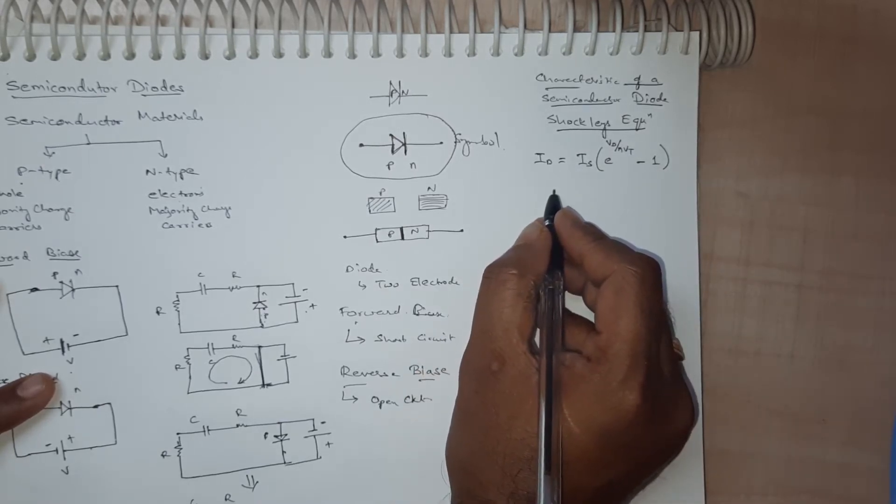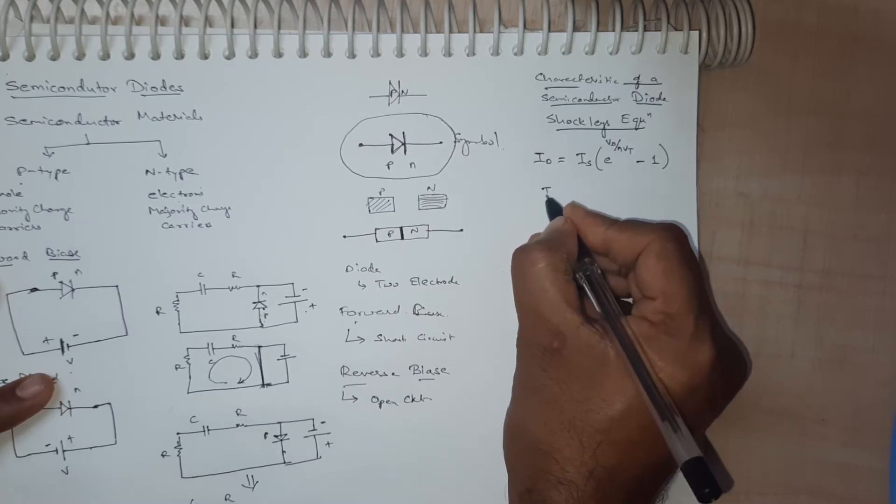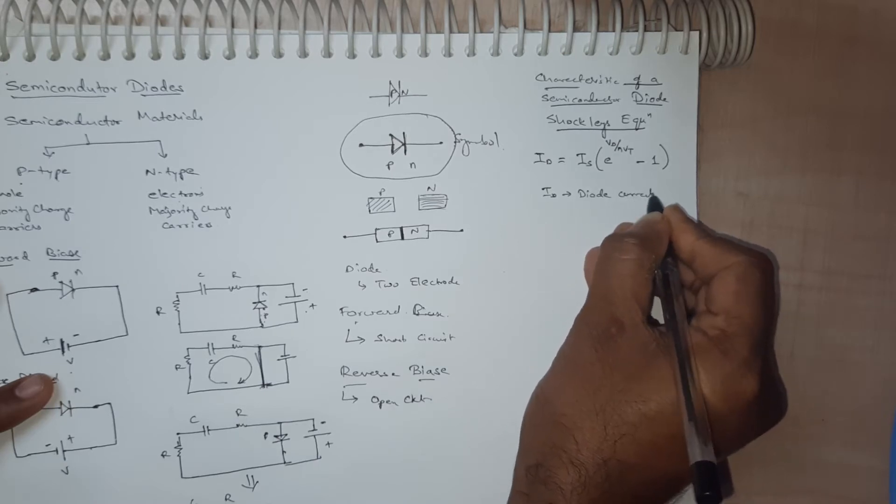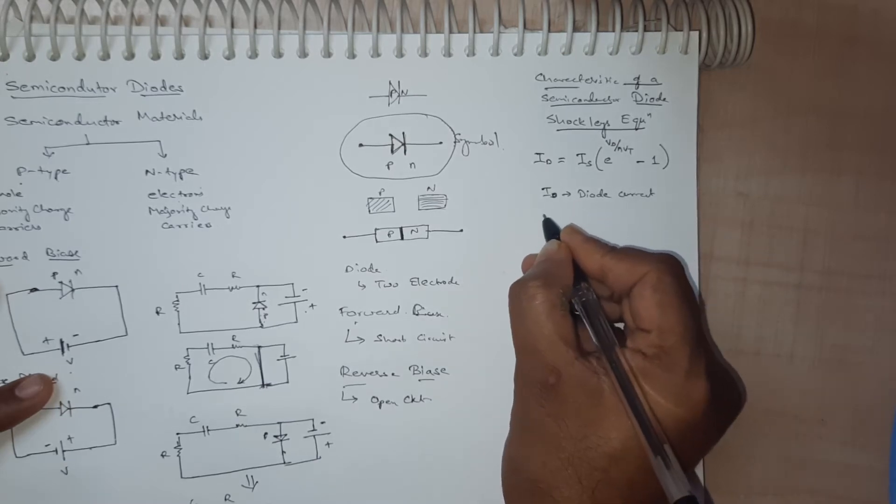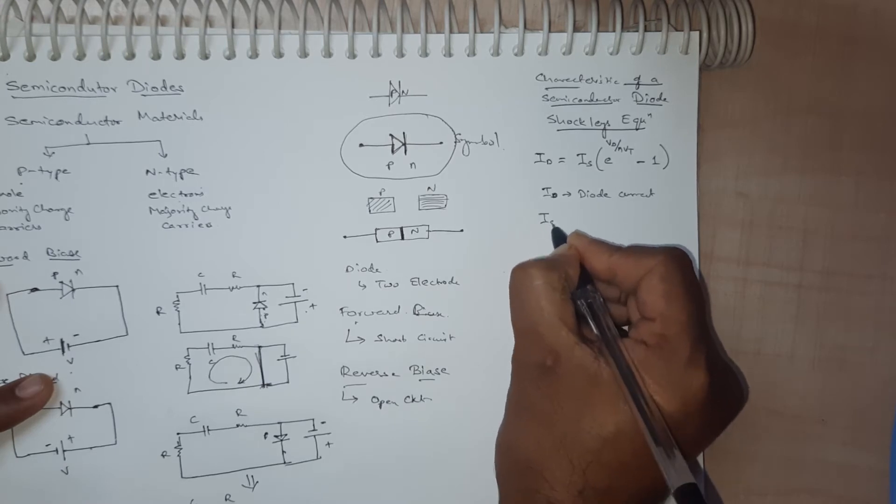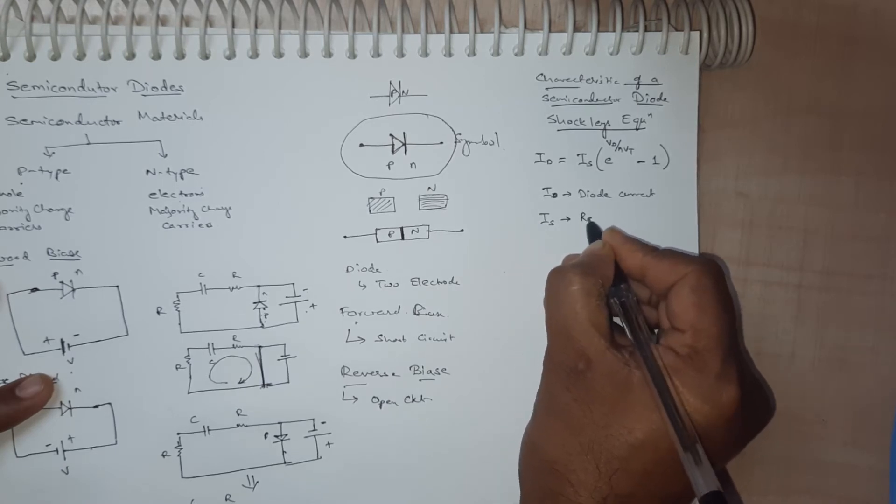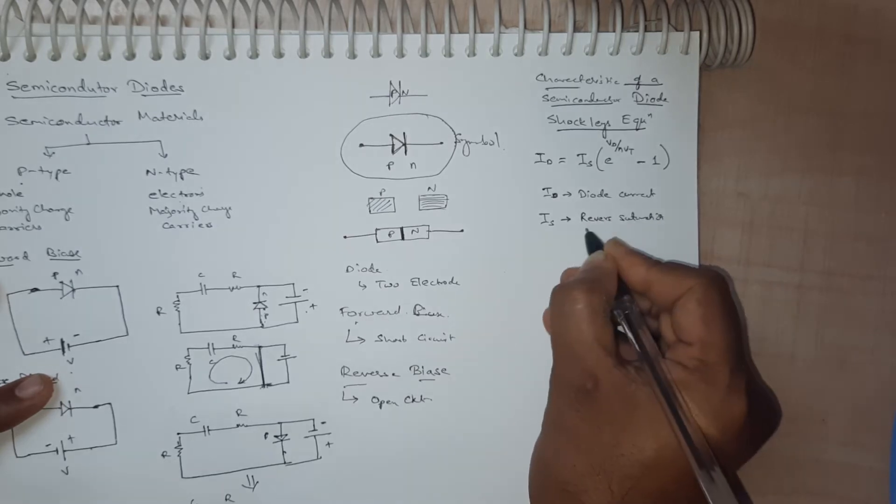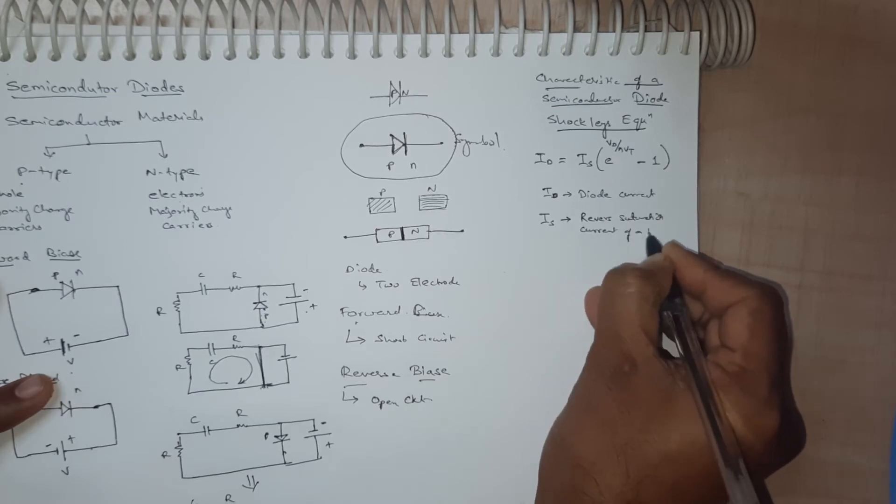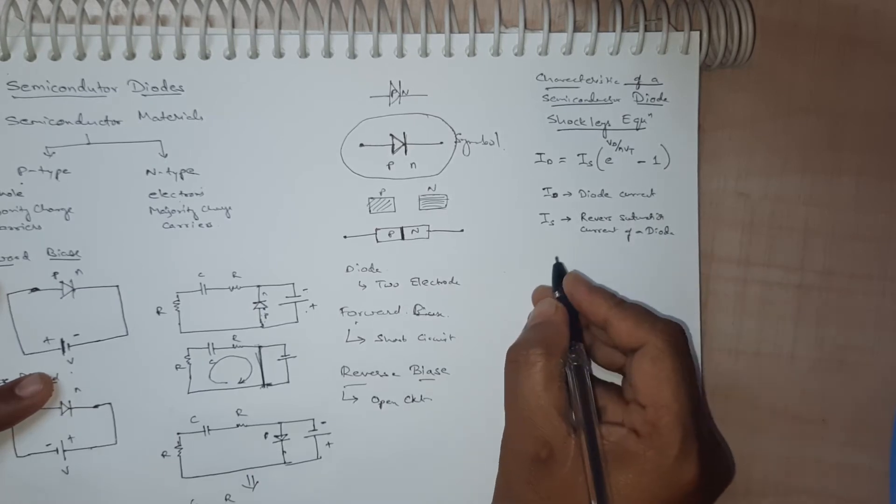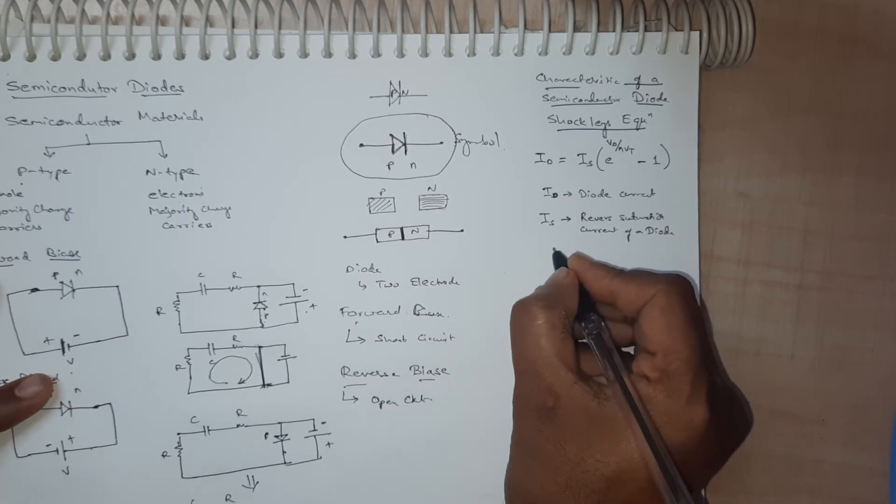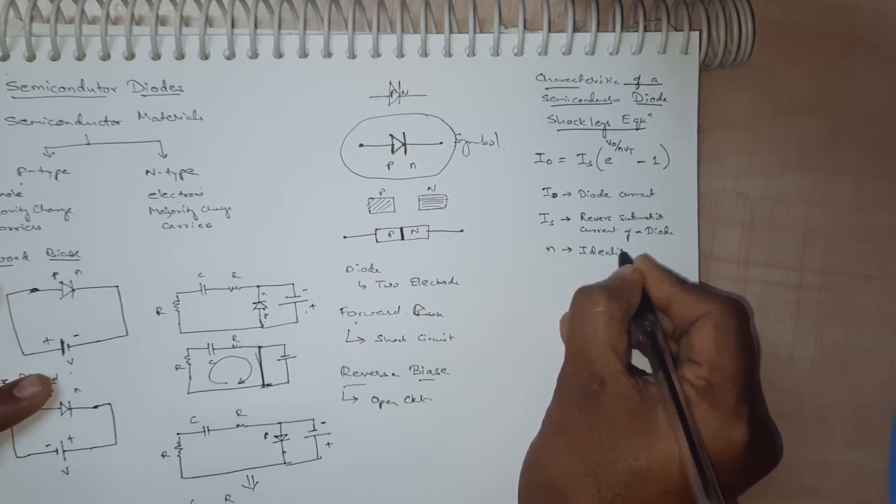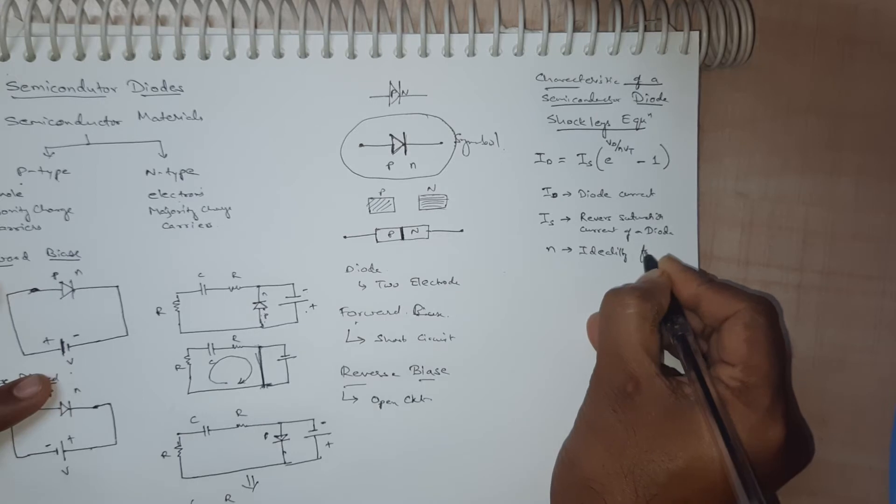Here the id is nothing but diode current. Is is reverse saturation current of a diode. N is the ideal factor which varies from material to material.